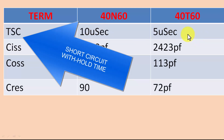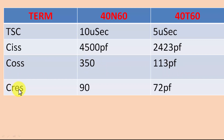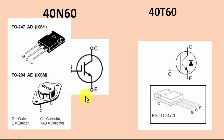The short circuit withstand time is 10 microseconds for the 40N60 and 5 microseconds for the 40T60. Input capacitance (Ciss) is 4500 picofarad versus 2423 picofarad. Output capacitance is 350 picofarad versus 113 picofarad, and reverse capacitance is 90 versus 72 picofarad. So capacitance values are significantly different.